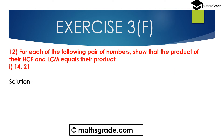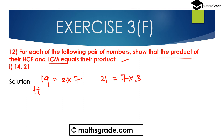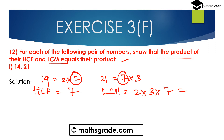Question number 12: For each of the following pair of numbers, show that the product of their HCF and LCM equals their product. First, find the HCF and LCM of 14 and 21. Prime factorization of 14 is 2 × 7, and prime factorization of 21 is 7 × 3. The HCF of 14 and 21 is 7, and the LCM is 2 × 3 × 7 = 42.